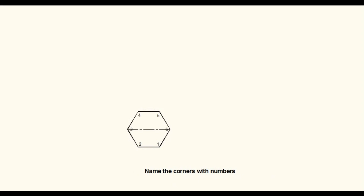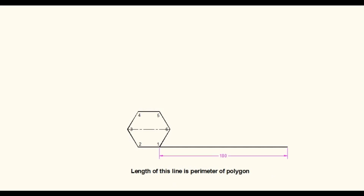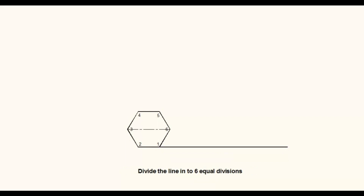Draw a horizontal line from the first corner of the hexagon. The length of the line is equal to the perimeter of the hexagon. One side of the hexagon is 30 mm and the hexagon has 6 sides. Therefore the perimeter is 30 times 6 equals 180 mm. Divide the horizontal line into 6 equal divisions and mark numbers on the divisional points. Extend each side of the hexagon.